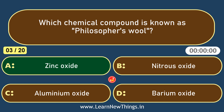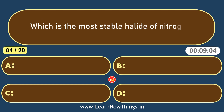Which is the most stable halide of nitrogen? NF3.